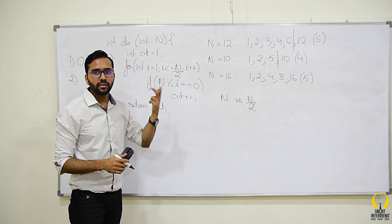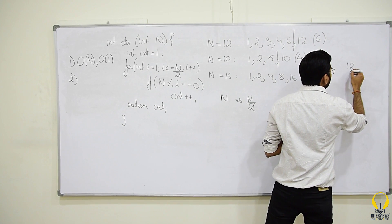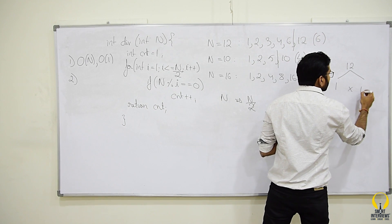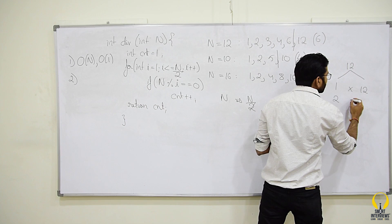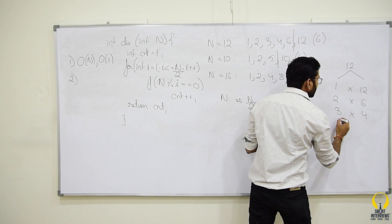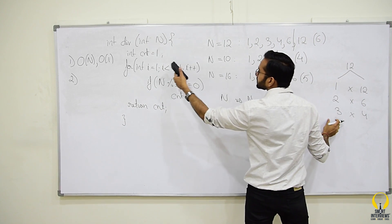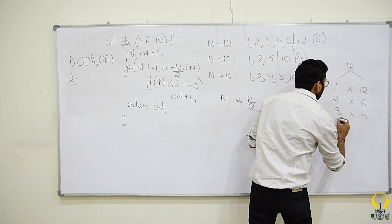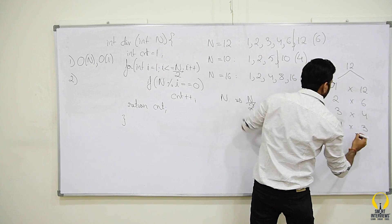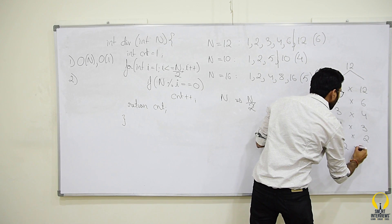Let me help you with the hint towards the optimized solution. So, if n is 12 and 1 is the divisor, we can write 12 is 1 into 12. 2 is the divisor, we can write 12 is 2 into 6, 3 into 4. After 3, the next divisor is 6, so 6 into 2 and the next divisor is 12, so 12 into 1.